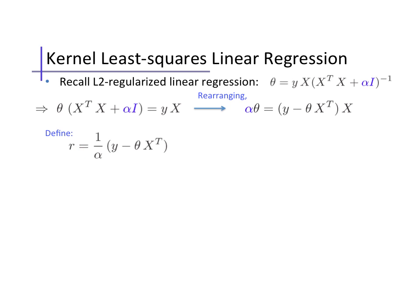Let's define an intermediate vector r. This is just the residual vector, y minus our prediction, theta X^T, scaled by 1 over alpha. Just by definition, theta equals r times X from here.